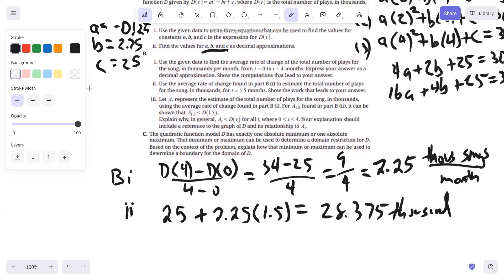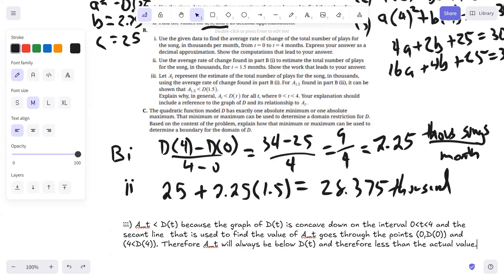Basically, this third part is getting at the relationship between the curvature of the graph and a secant line. So A sub T is going to be less than D of T because the secant line that we draw between the two endpoints is underneath the curve of D because D is concave down on that interval. So the estimate for A sub T is going to be less than the actual value of D of T. And there we have the concise statement for Part 3.